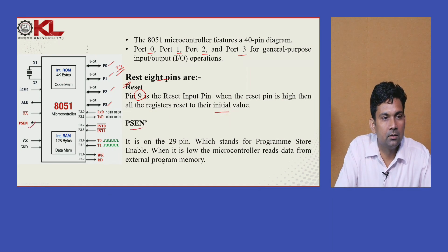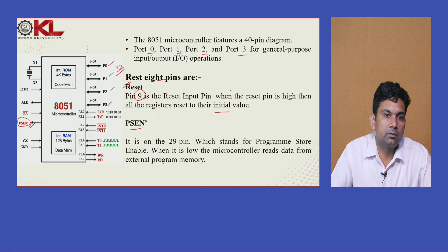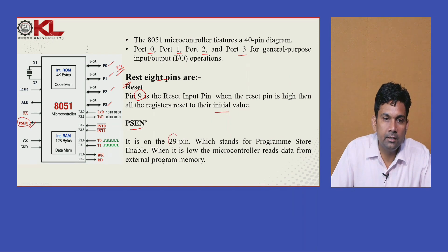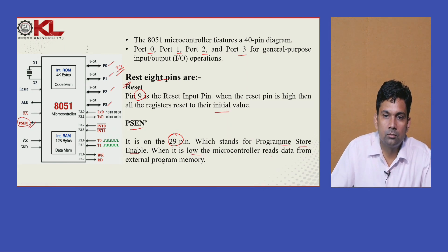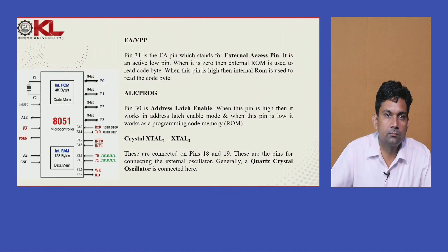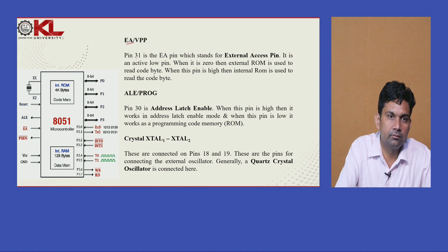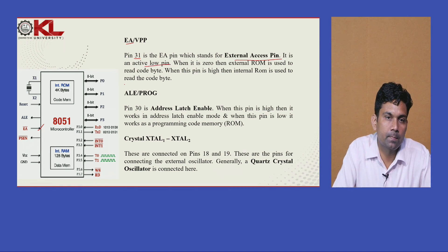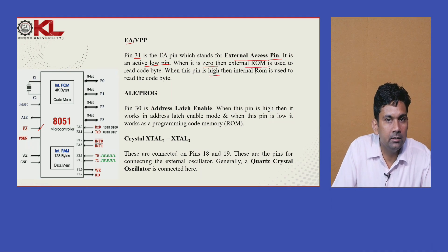The next pin is PSEN (Program Store Enable) at pin number 29, with an active-low bar. It is an active-low pin — when 0 is supplied, it is enabled; when 1, it is not enabled. When low, it reads data from external program memory. The next pin is EA (External Access) at pin number 31, also an active-low pin. When 0, it uses external ROM; when high, it uses internal ROM.